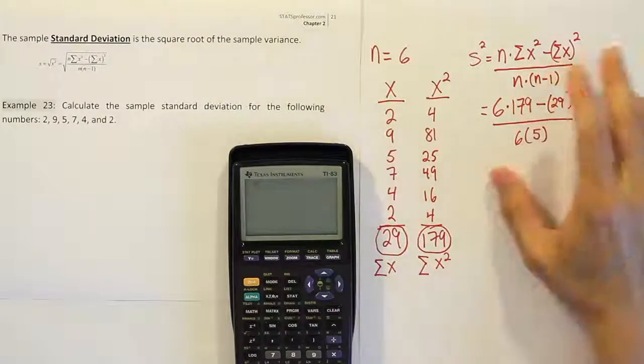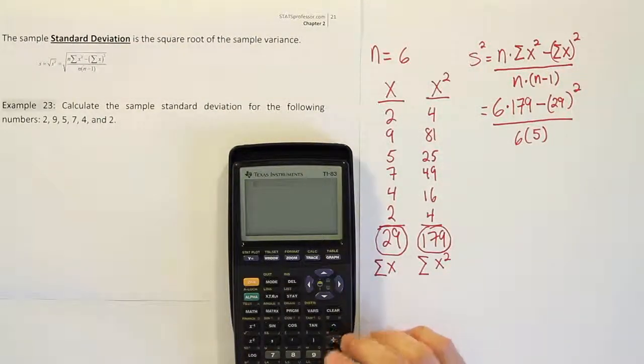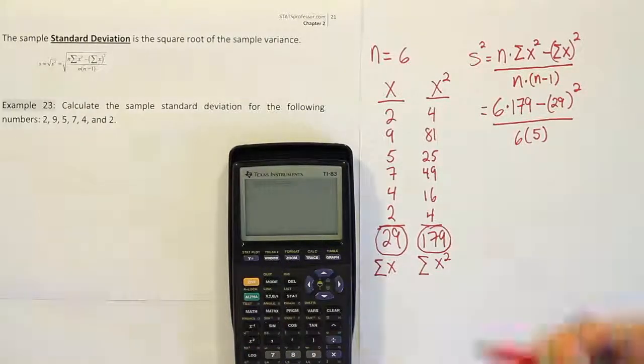That will work as well. I'm going to do it like I described first though, just putting it into the calculator in parts. So I'm going to do the top part first: 6 times 179 minus 29 squared, and we get the answer 233.